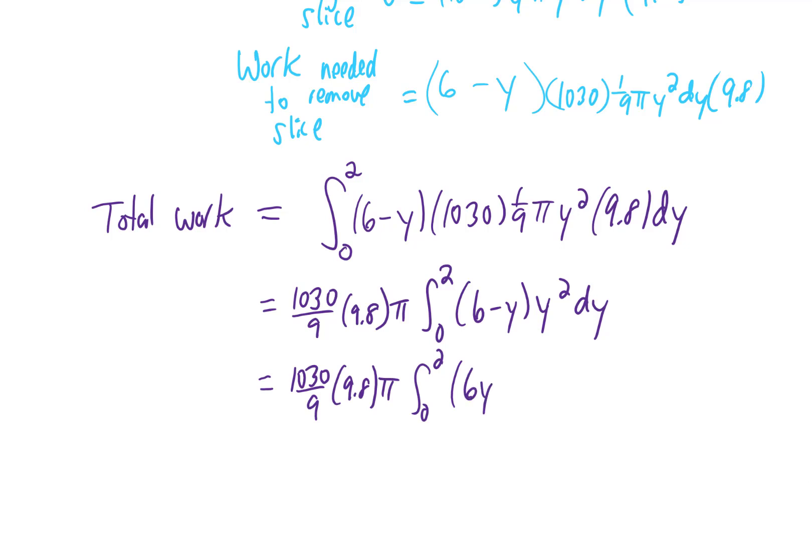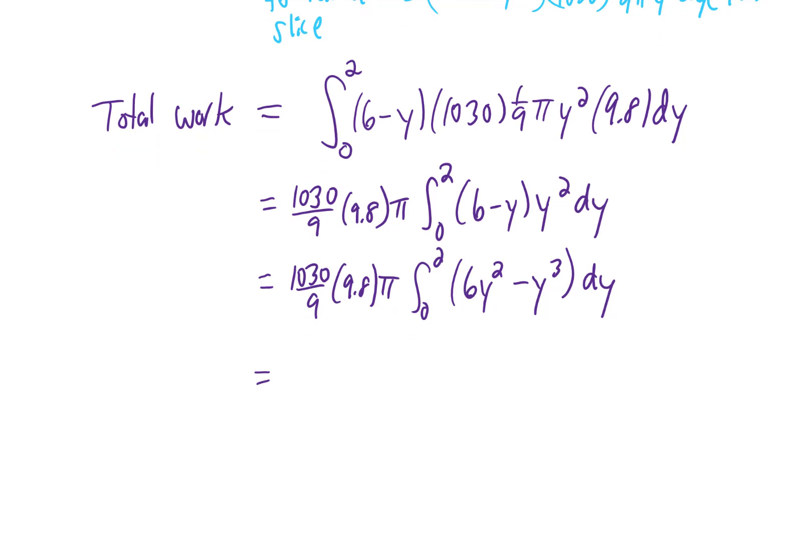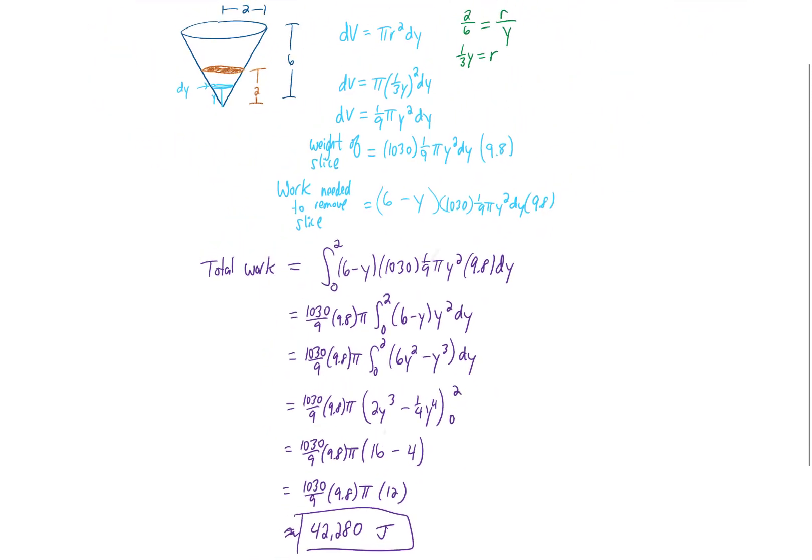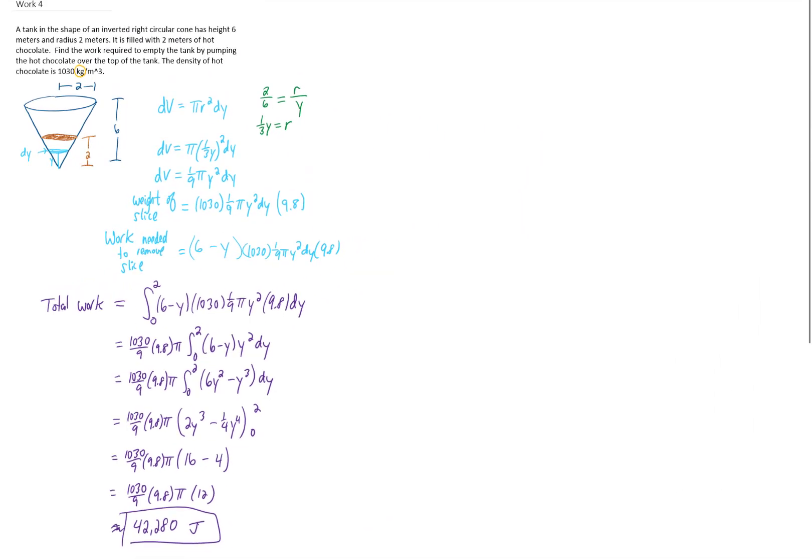To integrate, it's probably gonna be best to distribute that y squared through the parentheses. And now it looks like we can actually integrate. If we get out our calculators, I hope that I plug this all in correctly. I'm getting approximately 42,280 joules of work needed to remove all of this hot chocolate from the tank.